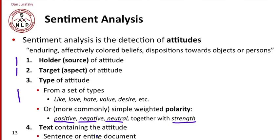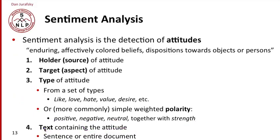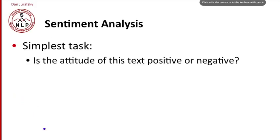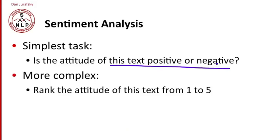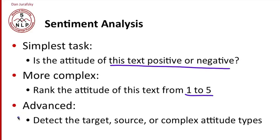We do this from some text which contains the attitude. We might consider an entire document and ask what's the whole document's sentiment, or look at individual sentences and ask what's the sentiment of this sentence. The simplest task is: is the attitude of some particular text positive or negative? Slightly more complex: rate the attitude from one to five — giving not just a binary value but an ordinal or numeric value. More advanced sentiment tasks detect the target, the source, and maybe more complex attitude types. This simplest task — is the attitude positive or negative — is what we'll spend the most time on.